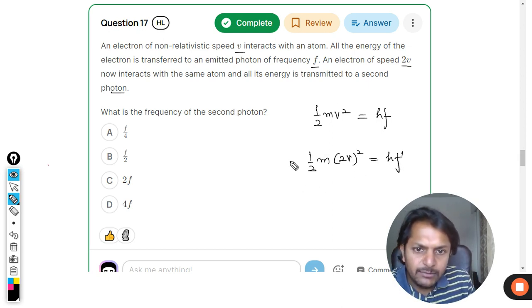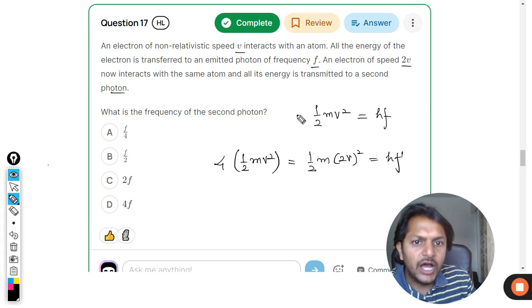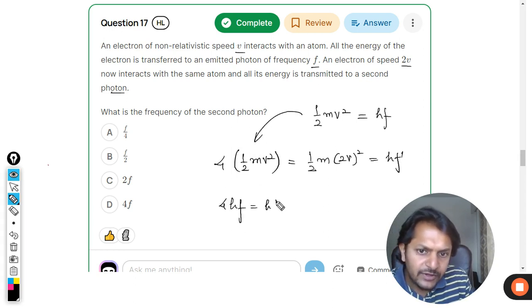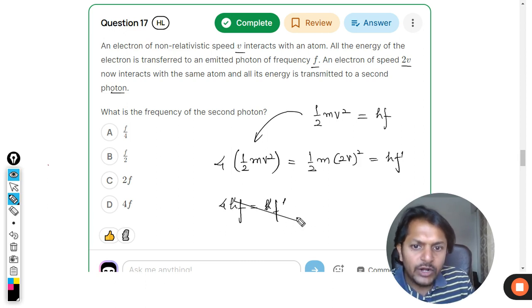Clearly, this can be written as four times the (1/2)mv^2. Now (1/2)mv^2 can be substituted here as h into f. f dash accordingly, we can say that f dash is coming out to be equal to 4f.